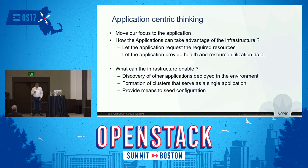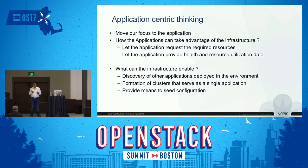The other thing that infrastructure can help the application developer with is the discovery of applications. Most applications in today's world are becoming more and more complicated. They have multiple processes running, and most of the time these processes need to discover each other. The infrastructure itself, if it is able to keep track of what kind of resources it is running, can help. When a new application comes to this infrastructure, it can query this registry of information and get to know all the other applications running on OpenStack.